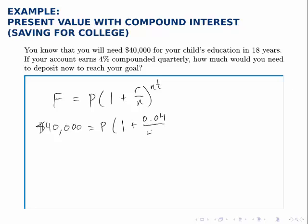And n is 4, because we're told it's compounded quarterly. And quarterly means 4 times every year. So then the exponent is 4 times the 18 years that this account will be active.